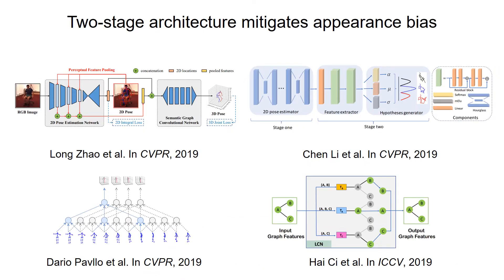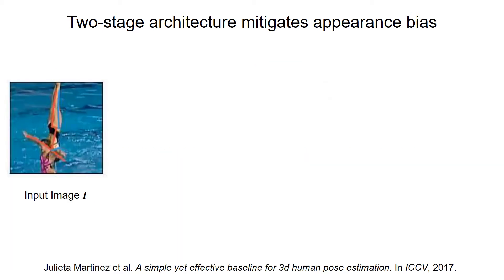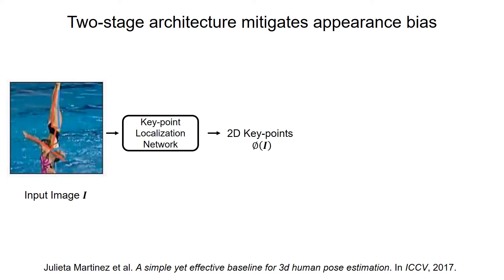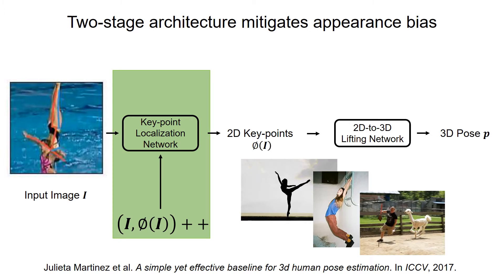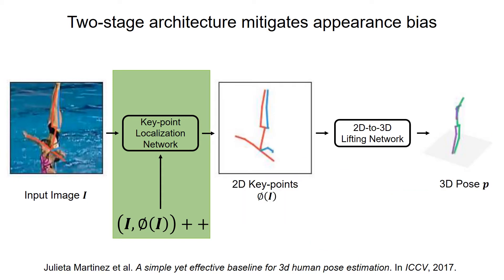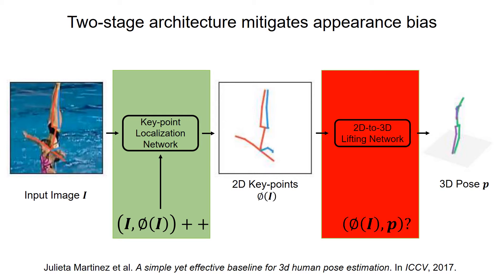The two-stage architecture adopted by recent works can help mitigate the appearance bias. The first stage locates human keypoints and the second stage lifts 2D keypoints to 3D pose. Since 2D annotations are easier to obtain, auxiliary outdoor images with 2D annotations can be utilized to augment the training data and improve the robustness of the first stage model. However, the geometric data bias caused by the 3D label collection process still negatively affects the second stage network, and how to mitigate this problem is not studied in-depth.